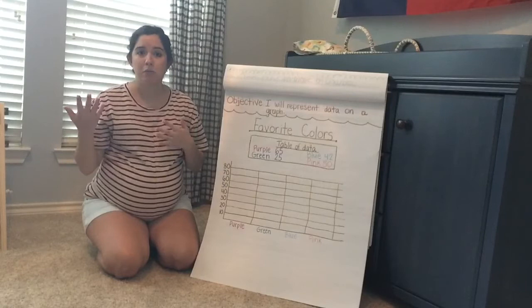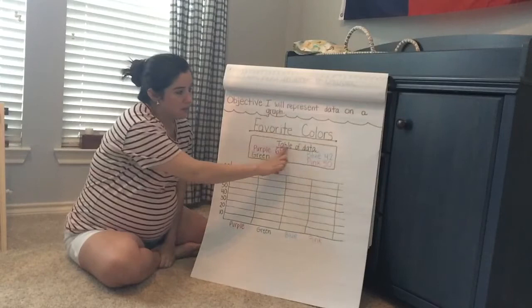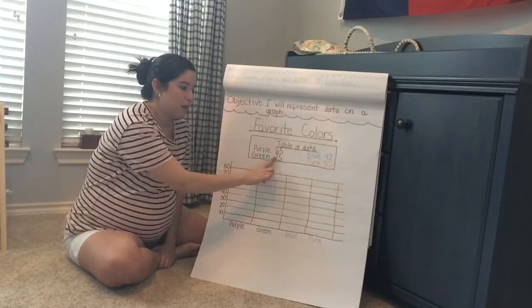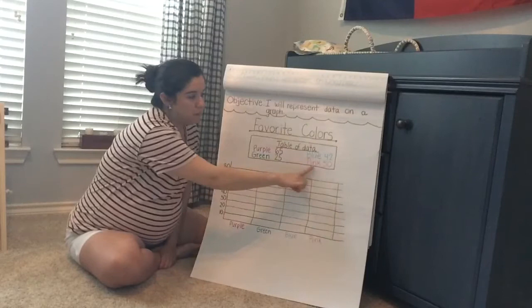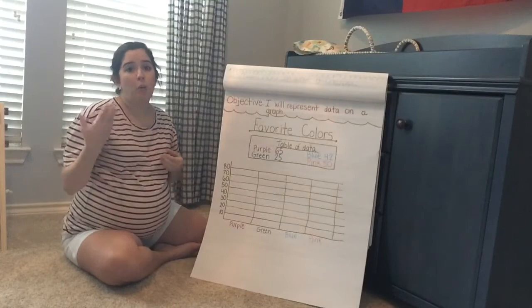Right here I have our table of data, and it's going over favorite colors. Purple had 65 votes, green had 25 votes, blue had 42 votes, and pink had 50 votes. I have already set up a bar graph that I'm going to be shading in to show you the exact expectations on how I want you to do it when you are doing it on your Seesaw activity for choice board five.